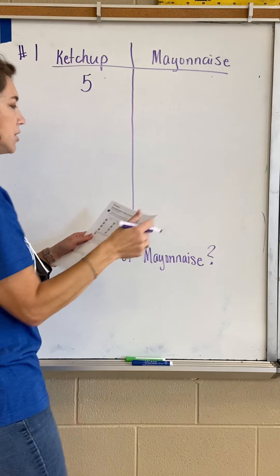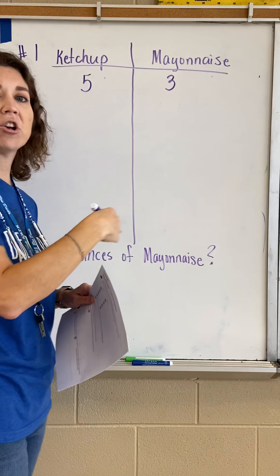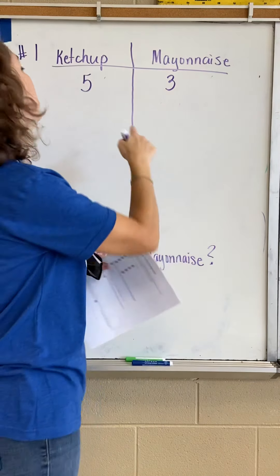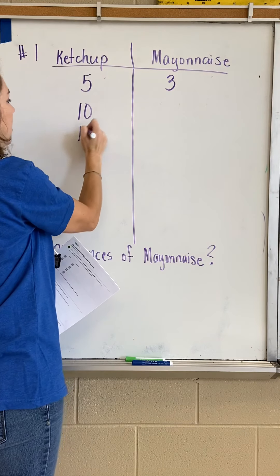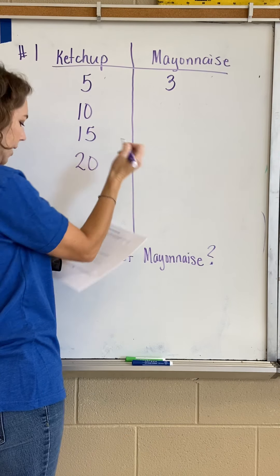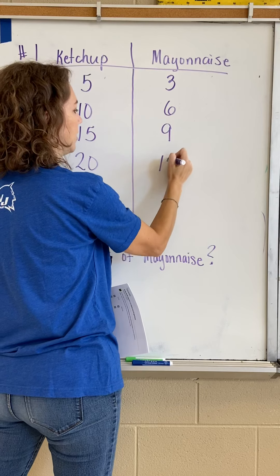Five ounces of ketchup to three ounces of mayonnaise. To finish this chart, you just skip count by fives under the ketchup: 5, 10, 15, 20. Then for mayonnaise, skip count by three: 3, 6, 9, 12.